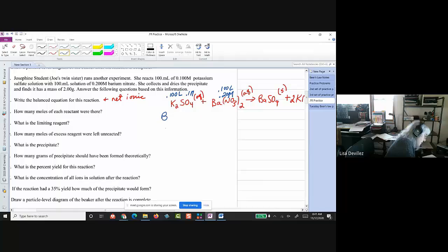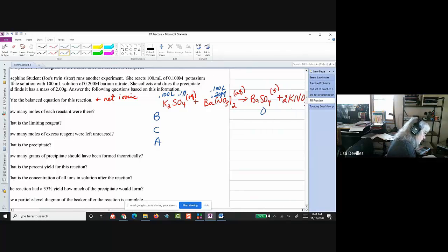All right, okay, so we're going to set up our BCA table, and the products get a 0 and a 0. All right, so that's going to be, it's a 0.01, and this is going to be 0.02.